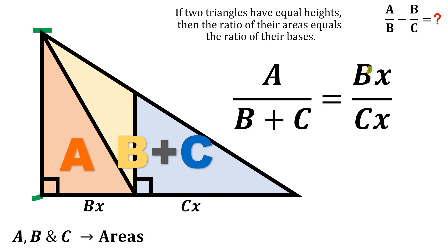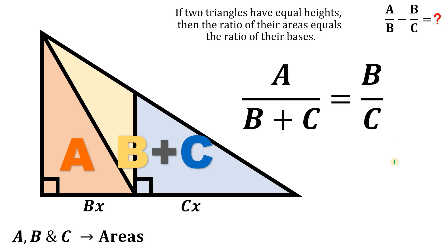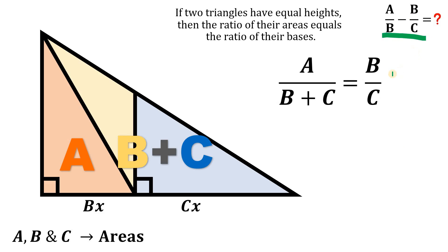So A over B plus C equals Bx over Cx. And we can eliminate this x over x. This is just one. And using this equation, we can now solve this, the value of this expression. So what we're going to do is to interchange this B and B plus C like this. And we will focus on this equation.